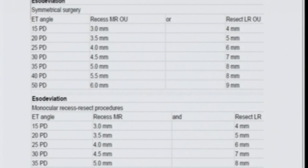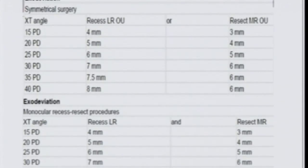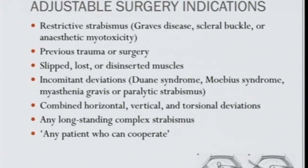Dosage calculations vary per surgeon — roughly, one millimeter of medial rectus recession corrects about 5–6 prism diopters, and one millimeter of lateral rectus recession or resection corrects about 3–4 prisms in my experience. Textbook values differ, and there are now apps available: input the prism deviation and it will suggest how much to operate on each eye.